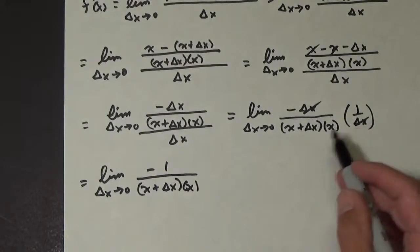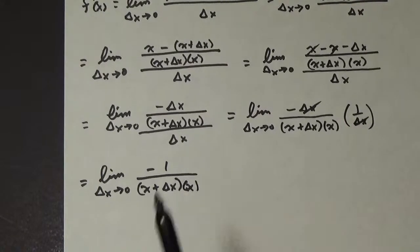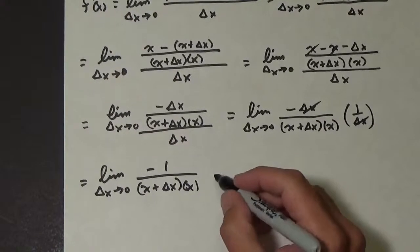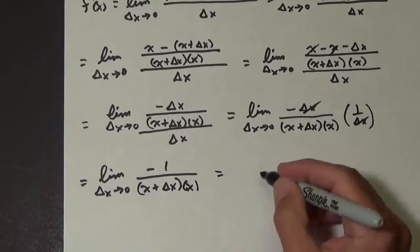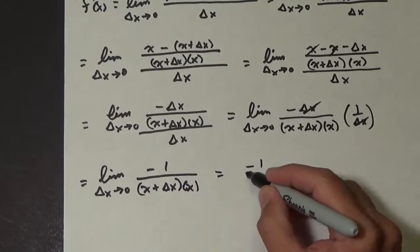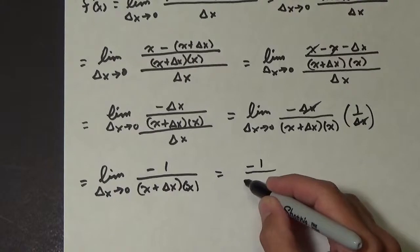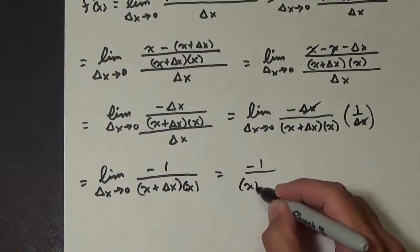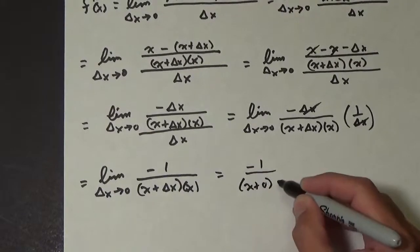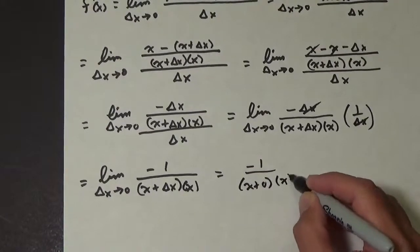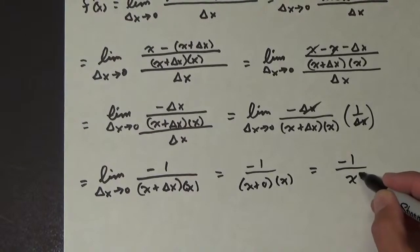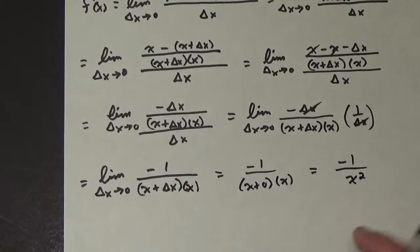Now that we don't have the issue of delta x being in the denominator, we can substitute in zero. So we get negative one over x plus zero times x, which ends up being negative one over x squared.